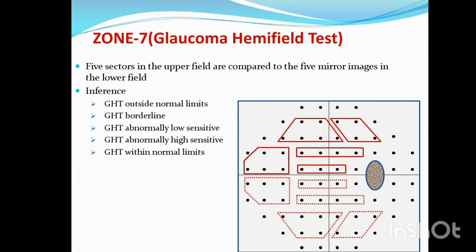We compare it with mirror images — the 8R and 8R comparison — and the machine can automatically calculate it. This is the glaucoma hemifield test, which compares the superior quadrant and the inferior quadrant. If there is too much difference, we have to calculate whether it falls outside normal limits.